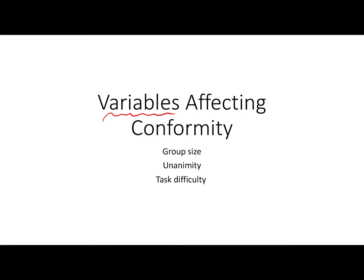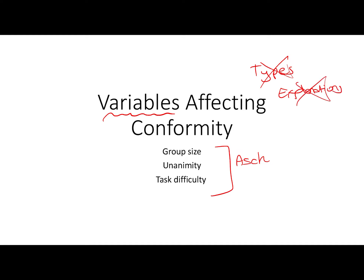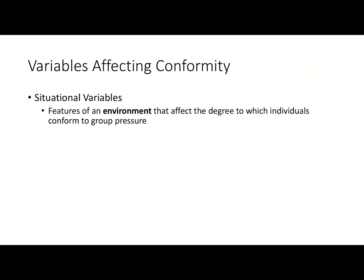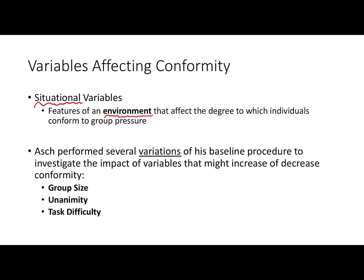In this video we're going to be looking at variables affecting conformity, and these were investigated by Asch. Notice that this is different from types of conformity and also different from explanations for conformity, so pay close attention whenever you're given a question about conformity. We're looking at situational variables — features of the environment and context that affect the degree to which individuals conform to group pressure. Asch performed variations of his baseline procedure to investigate group size, unanimity, and task difficulty.